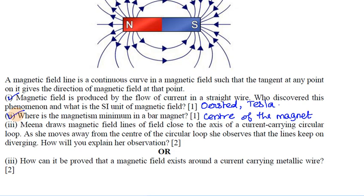Meena draws magnetic field lines close to the axis of a current-carrying circular loop. As she moves away from the center of the circular loop, she observes that the lines keep on diverging. How will you explain her observation?